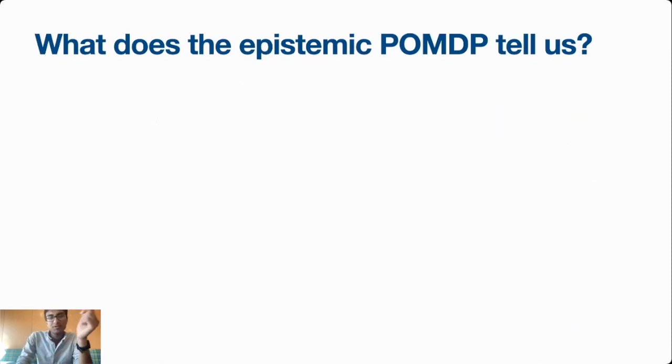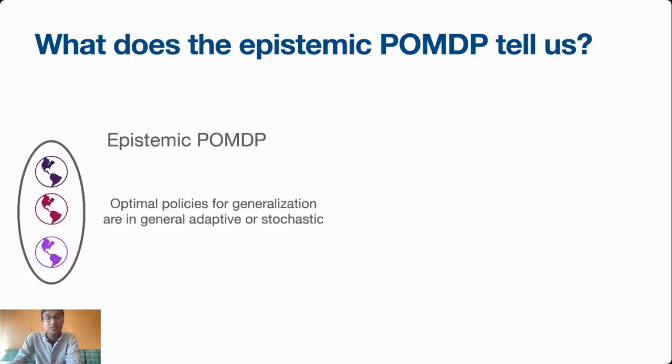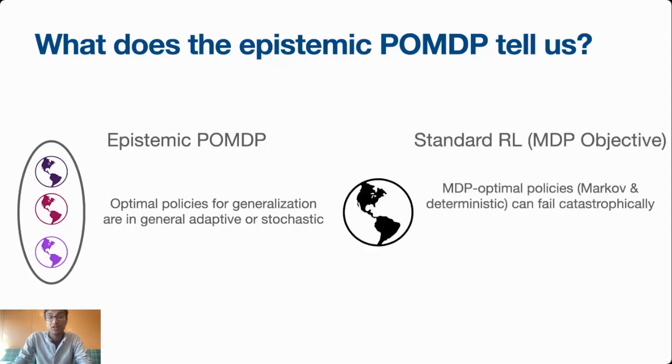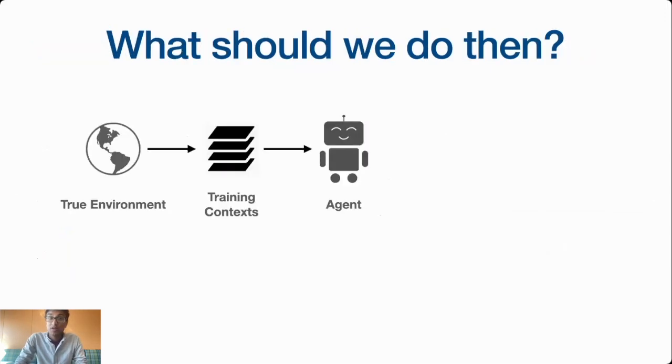So going back, what does the POMDP tell us? It tells us that if we want to generalize well, we're going to need the hallmarks of partial observability. For example, the optimal policies for generalization are in general going to be adaptive, or in the non-recurrent case, stochastic. It also tells us that the way that we currently train RL algorithms, which is using standard MDP objectives, is a very bad idea, because these objectives and algorithms learn MDP optimal policies which can fail catastrophically. It turns out that this is not just a specific issue with this objective. Even adding things like stochastic regularization is insufficient to escape these issues. In some ways, the epistemic POMDP objective is actually just not aligned with these types of objectives that people learn using MDPs.